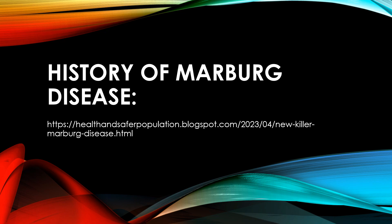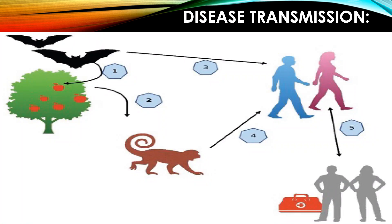Transmission of this disease comes mostly from fruit bats that eat fruits. Those fruits can then be eaten by animals or humans, or there can be direct contact from the bat to a human or animal. After that, animals that consumed the fruits can contact humans, causing illness. Once a person is infected, they can transmit the disease to other people or via contaminated objects.